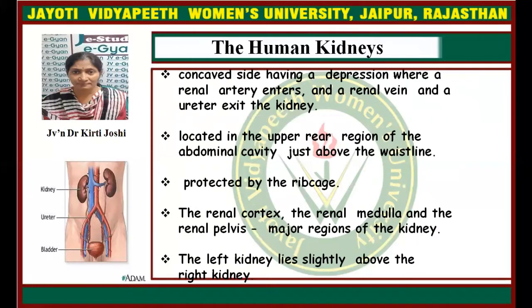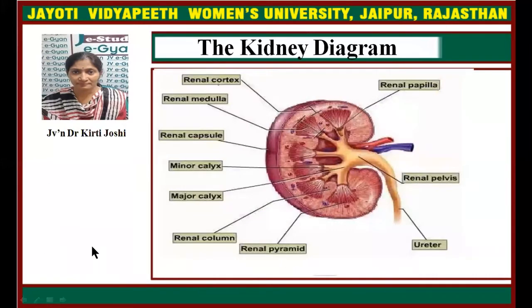The concave side has a depression where the renal artery enters and the renal vein and ureter exit the kidney. The kidneys are located in the upper rear region of the abdominal cavity just above the waistline. The left kidney lies slightly above the right kidney. This is the diagram of the kidney.